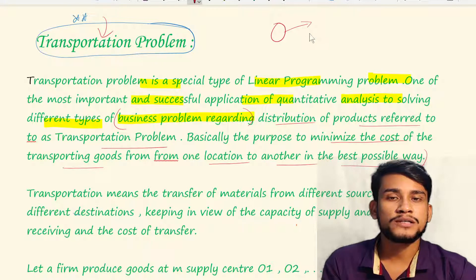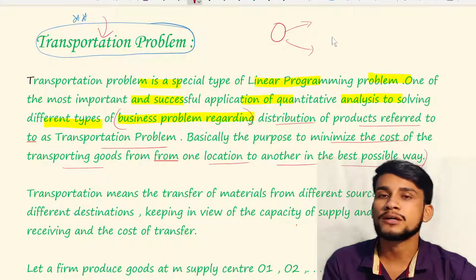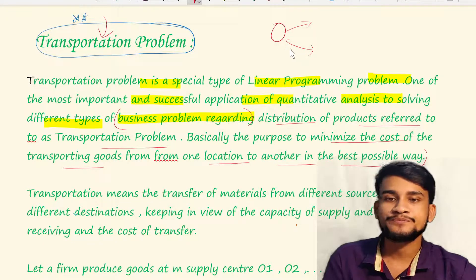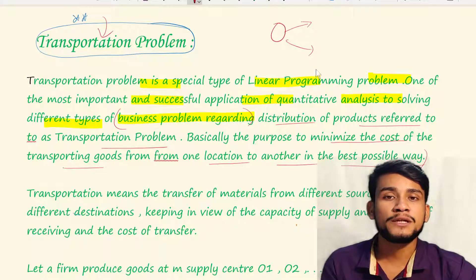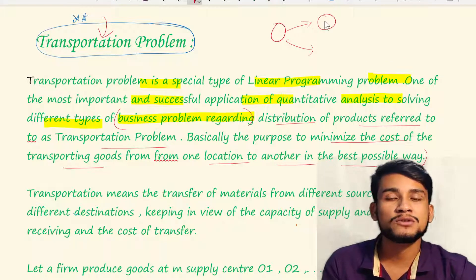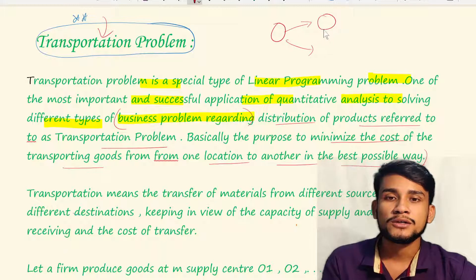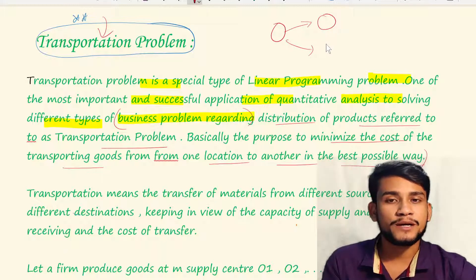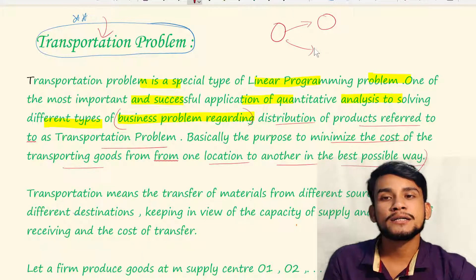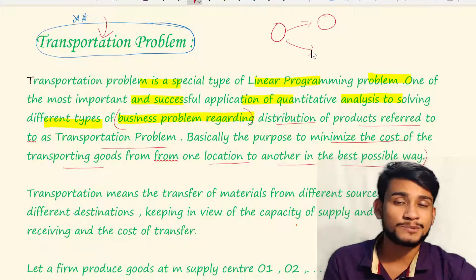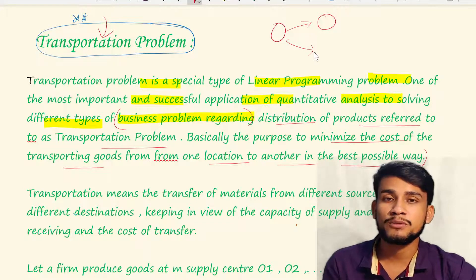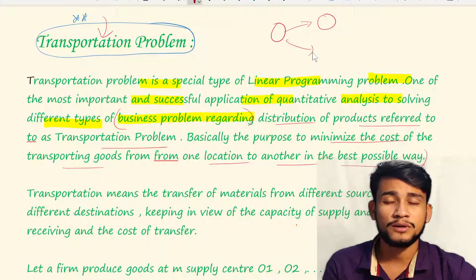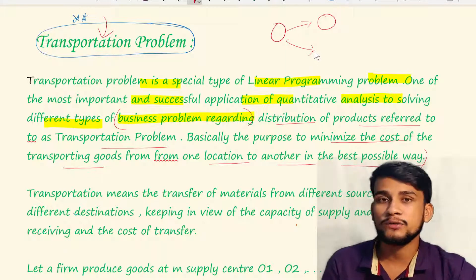Suppose there is a company which makes some products and those products are distributed across cities in the country. The company's goal is to make the transportation cost minimum. Based on this transportation problem, companies develop their business model.